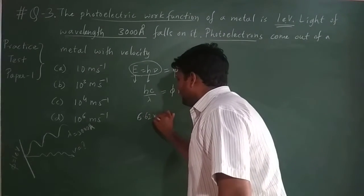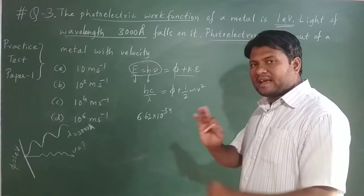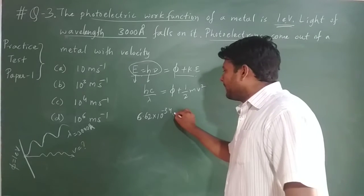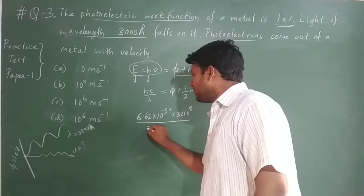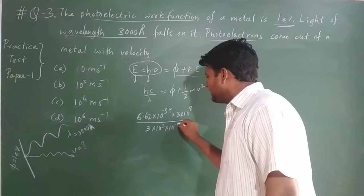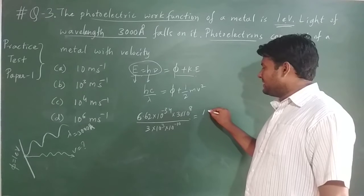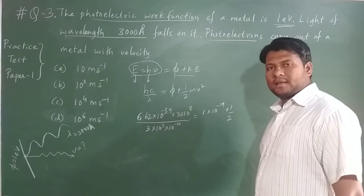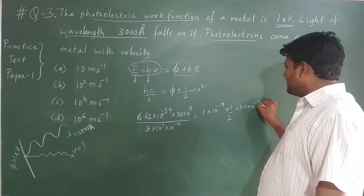H is 6.62 × 10⁻³⁴. Substituting values: C is 3 × 10⁸, and lambda is 3 × 10³ × 10⁻¹⁰. The 3s cancel out, and 6.62 remains as is. Using the law of indices — a^m × a^n = a^(m+n) — the powers add: −34 + 8 = −26, giving 10⁻²⁶ in the numerator. In the denominator, 3 − 10 = −7, so 10⁻⁷ shifts to the numerator as 10⁺⁷. The work function is 1 eV = 1 × 10⁻¹⁹ joules, plus ½ × (mass of electron: 3.1 × 10⁻³⁵) × v².